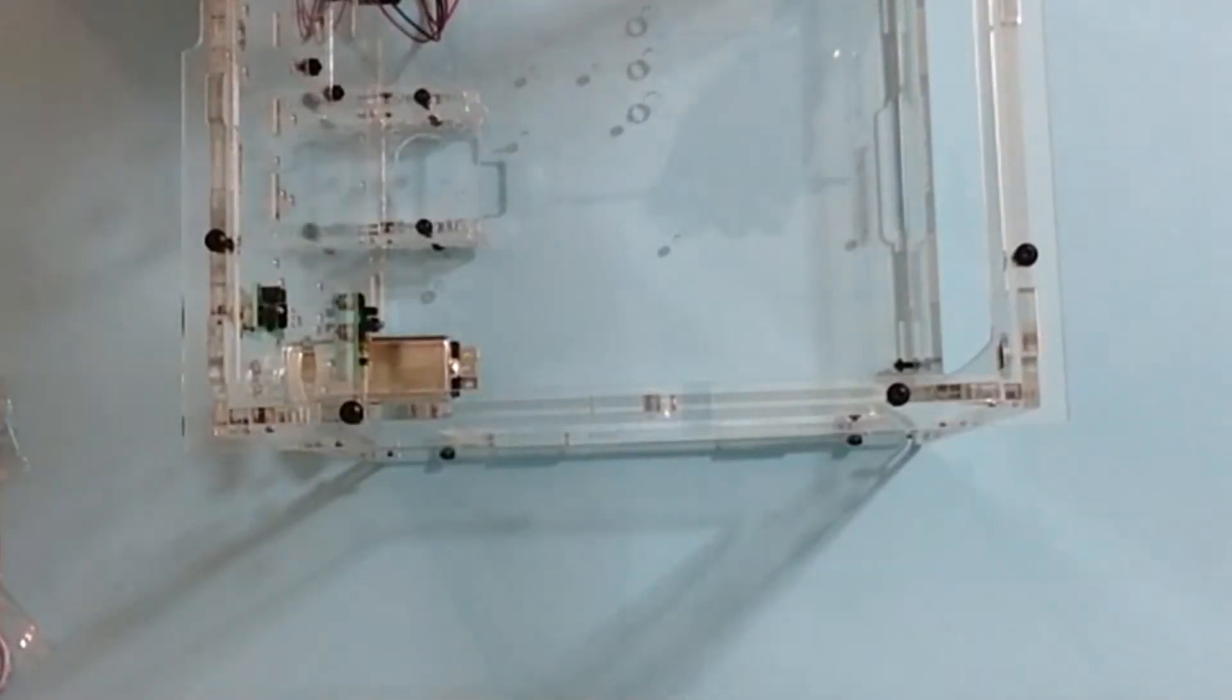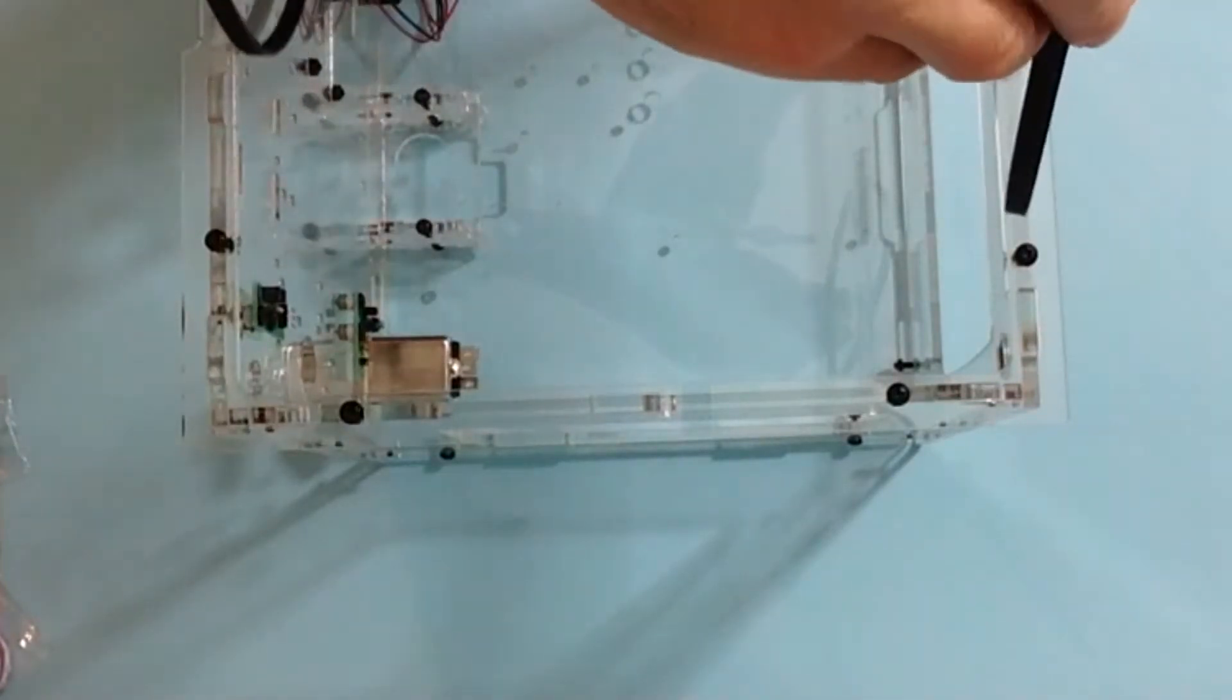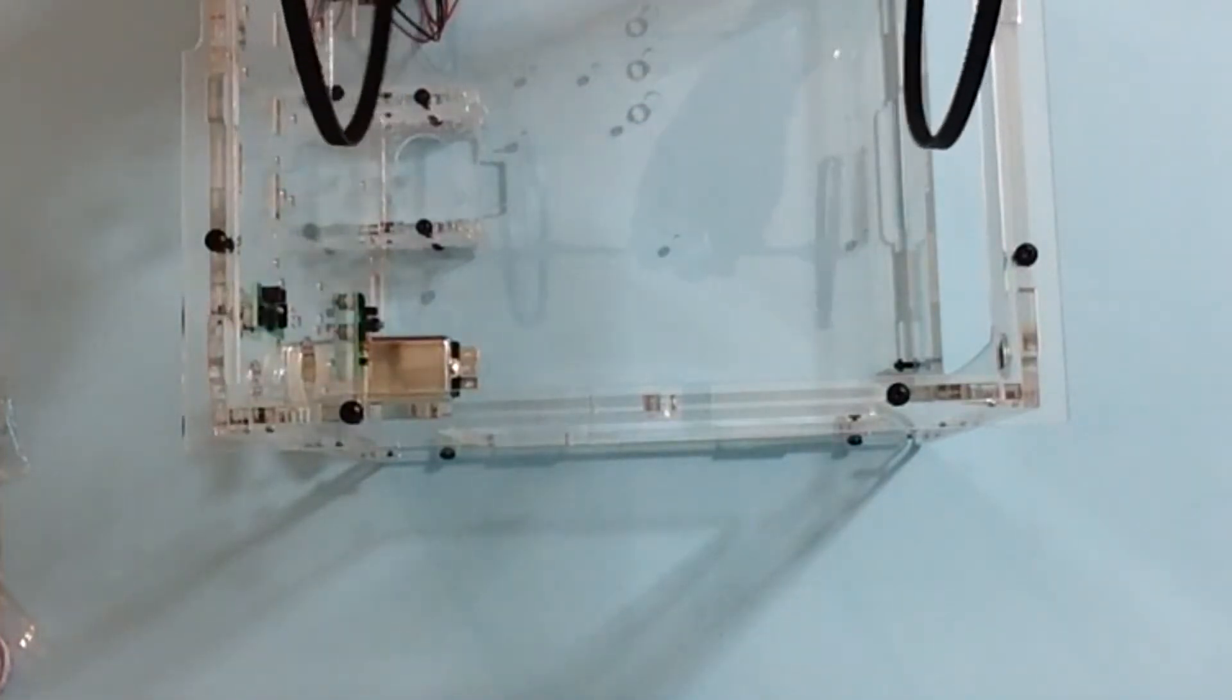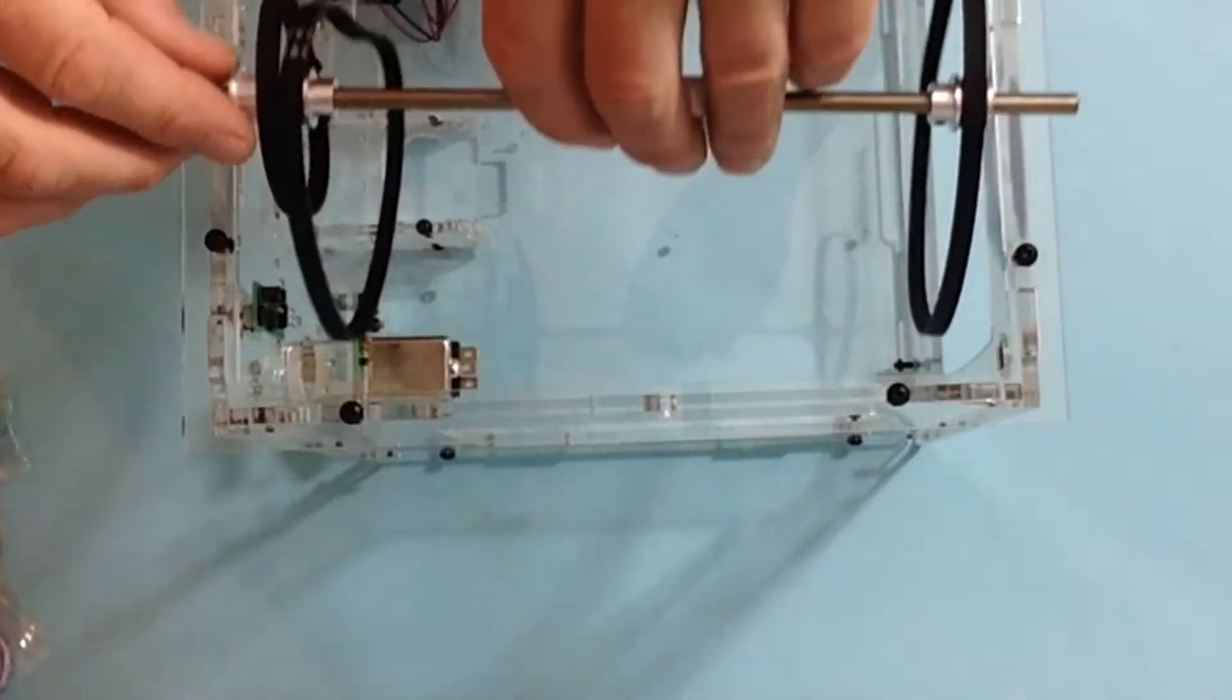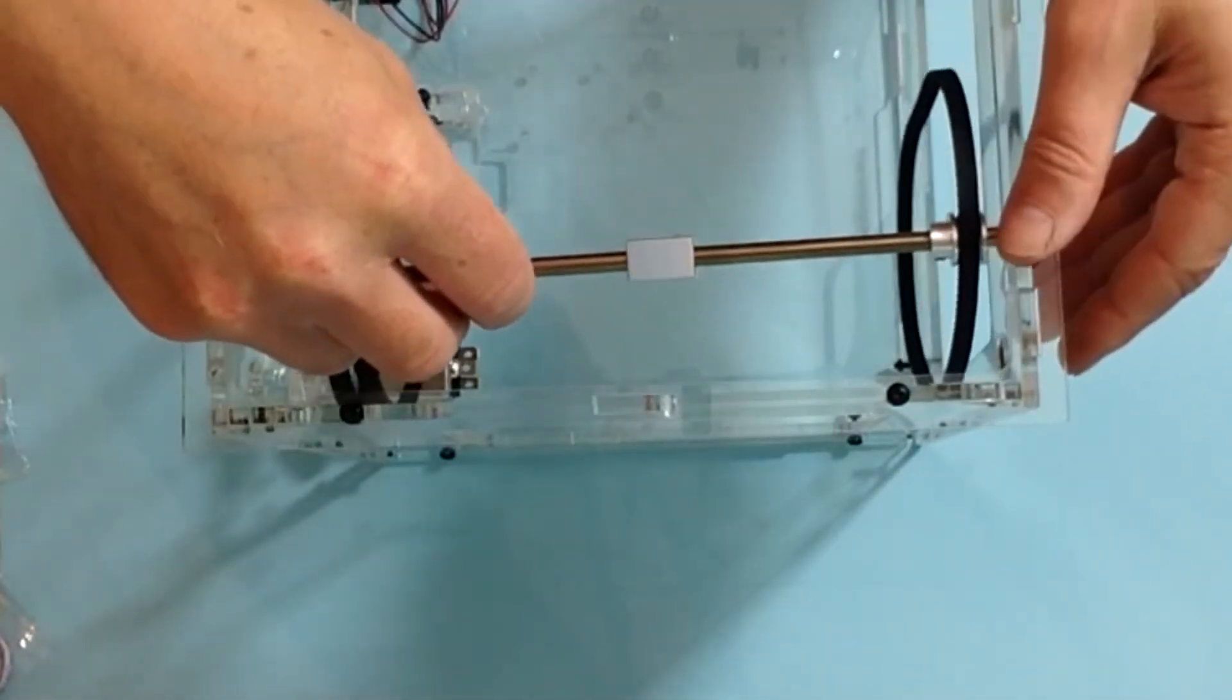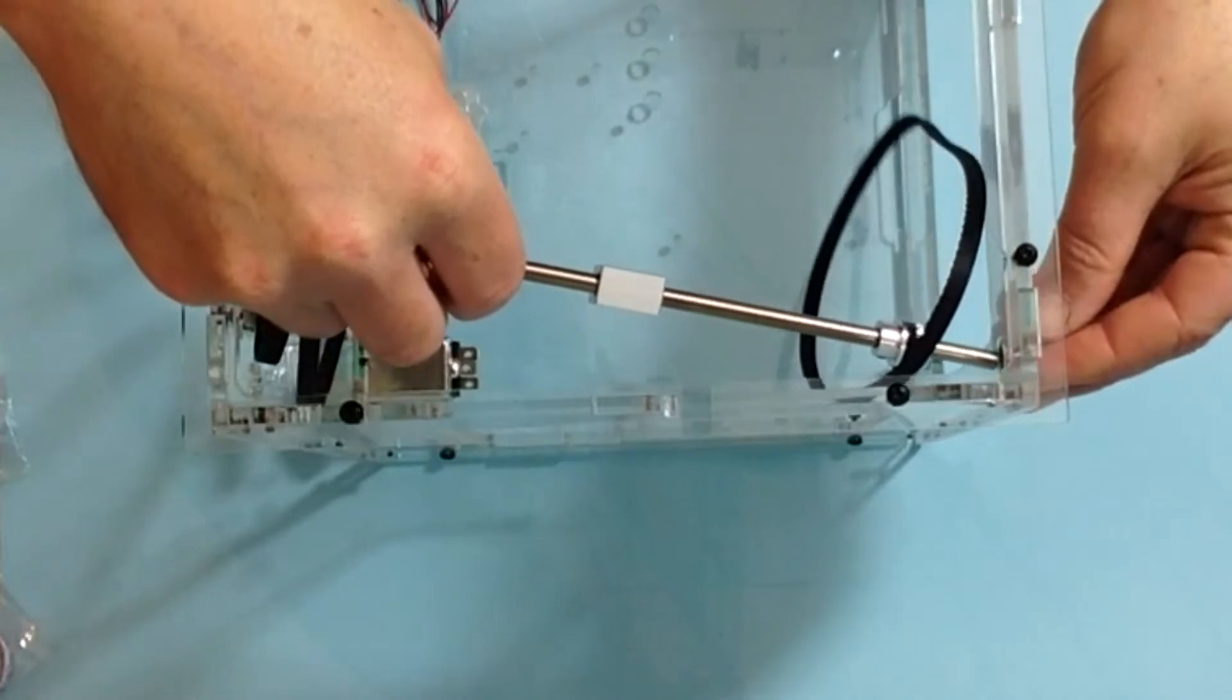Take the assembly from earlier and then take the long pulley belts, placing those over the long and the short pulleys like so, and then just gently placing the shaft through the holes.